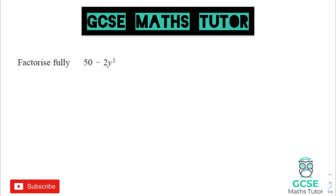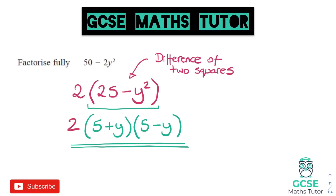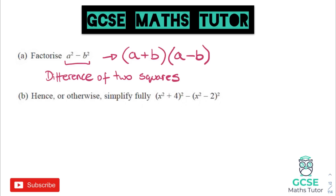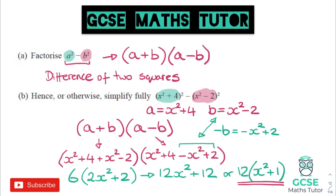If you have to factorize something and can't spot how, it might be that you can take something out as a single bracket and then spot a difference of two squares inside. For this one: 5 plus y and 5 minus y — but you'd only spot that once you factorize the 2 out. You may also have expressions with letters that look more complex; hopefully you'll spot that's a difference of two squares. If asked to use that in a further question, look at what's in the question — here a and b were actual expressions, so sub them in, simplify both brackets, and multiply.